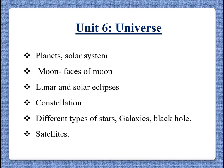Unit 6: Universe. This is the final unit and it deals with planets, the solar system, different phases of the moon, lunar and solar eclipses, constellations, different types of stars, galaxies, and black holes. The student will also study satellites like artificial satellites, the Global Positioning System, geostationary satellites, etc.